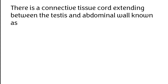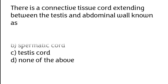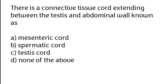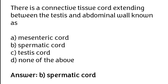There is a connective tissue cord extending between the testis and abdominal wall, known as: A) Mesenteric cord, B) Spermatic cord, C) Testis cord, D) None of the above. The correct answer is option B — spermatic cord.